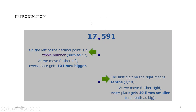Looking at the number again, on the left-hand side of the decimal point is the whole number — seventeen. The numbers to the left we call the whole number. As we move left, every place gets ten times bigger. To the right of the decimal point are decimal numbers. The first digit after the decimal point is tenths. As we move further right, every place gets ten times smaller — that is why we divide by ten.